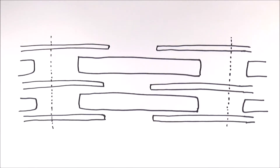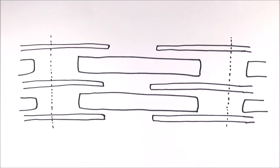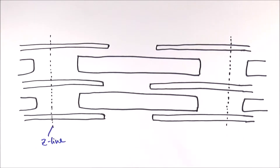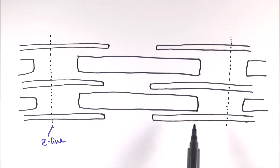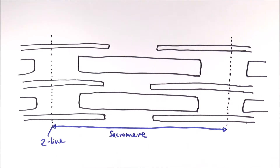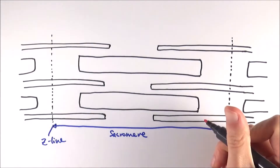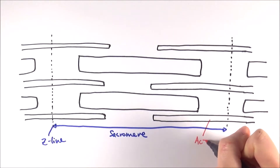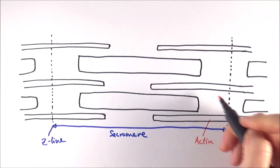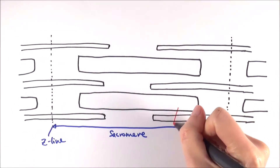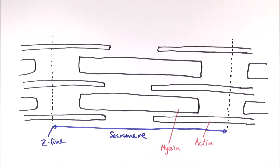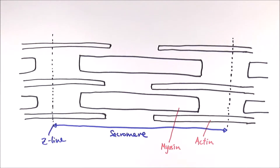Now let's look at the sarcomere in more detail. The z-line is not a proper structure in itself, but it defines the sarcomere — we have one z-line and another z-line, and in between those two z-lines is the sarcomere. It is made up of actin and myosin. Actin is easily recognizable as the thinner filament, while myosin is the much thicker filament.